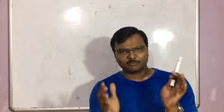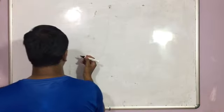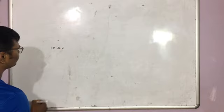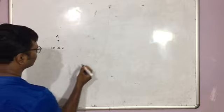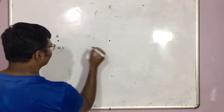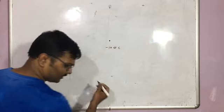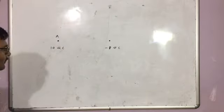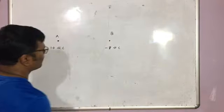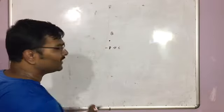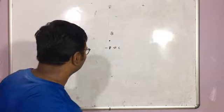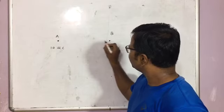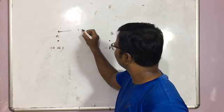The second question is based on the principle of superposition. Suppose there is a charge of plus 10 micro coulomb at point A, and another charge of minus 8 micro coulomb at point B. The separation distance between them is given as 1 centimeter. The question is: locate a point where the net electric field is 0.